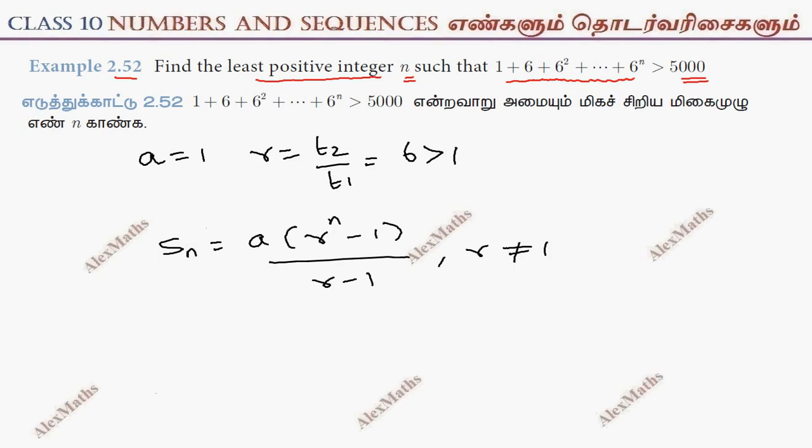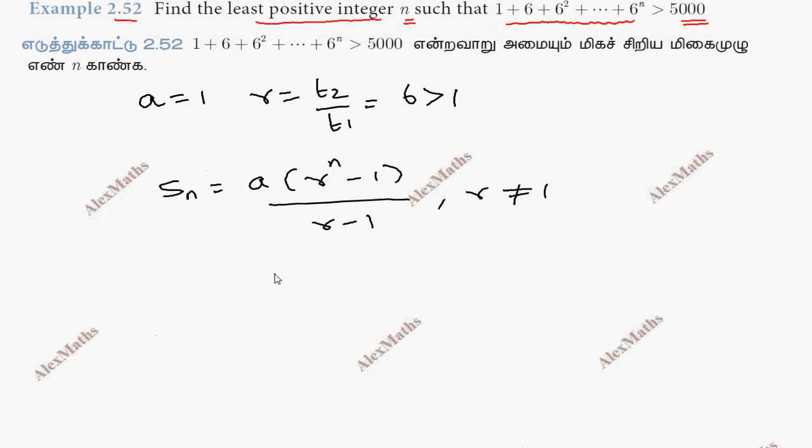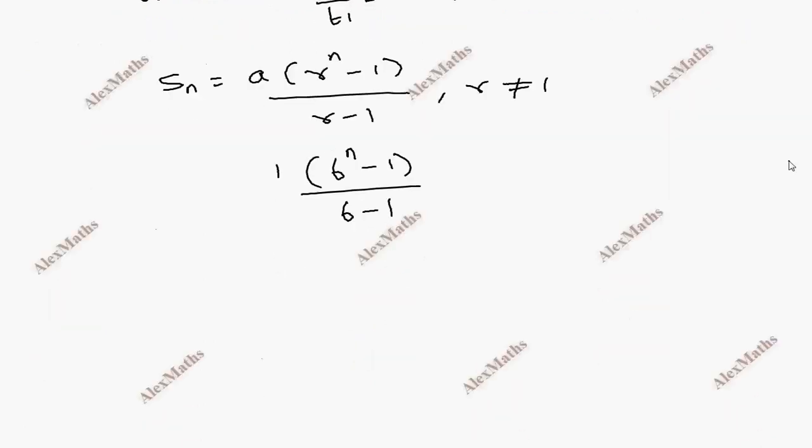If you look at the sum, 1 times 6 power n minus 1 by 6 minus 1. So total is 6 power n minus 1 by 5. If you look at the sum,